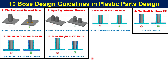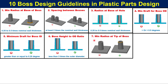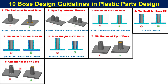Guideline 7: Minimum radius at the tip of the boss. The boss feature is used for fastening purposes and is subjected to loading. A fillet of a certain minimum radius value should be provided at the tip of the boss to reduce stress.